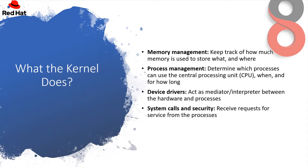What does the kernel do? The kernel performs four jobs very efficiently. First, memory management — it keeps track of how much memory is used, to store what and where. Second, process management — it determines which processors can use the CPU, when and for how long. Third, device drivers — it acts as a mediator and interpreter between the hardware and processes. Fourth, system calls and security — it receives requests for service from the processes. The kernel, if implemented properly, is invisible to the user, working in its own little world known as kernel space, where it allocates memory and keeps track of where everything is stored. What the user sees — like web browsers and files — is known as the user space, the front end which the user is interacting with.